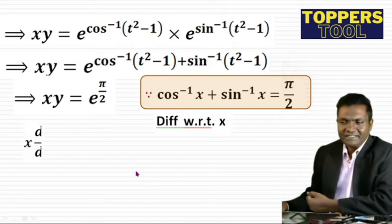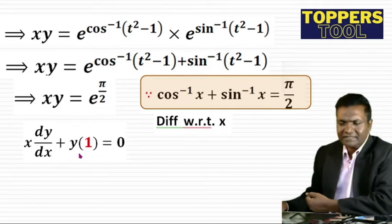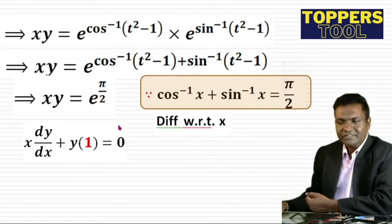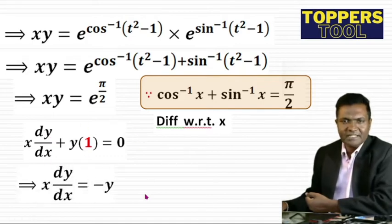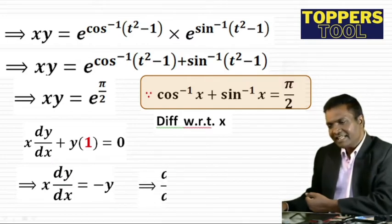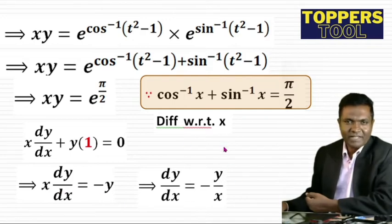Differentiate xy = e^(π/2) with respect to x using the product rule: x·(dy/dx) + y·(1) = 0, since the right side is constant and its derivative is 0. So x·(dy/dx) = -y, which gives dy/dx = -y/x.